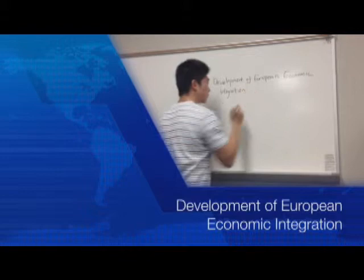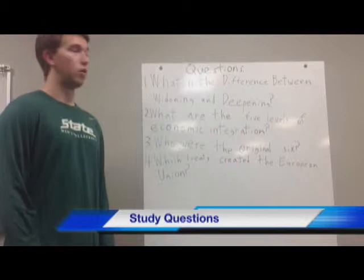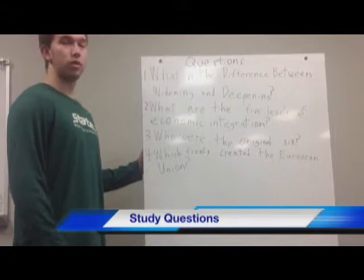There are four questions that you should be able to answer after this presentation. The first question is: what is the difference between widening and deepening? The second question is: what are the five levels of economic integration? The third question is: who were the original six? And the fourth question is: which treaty created the European Union?